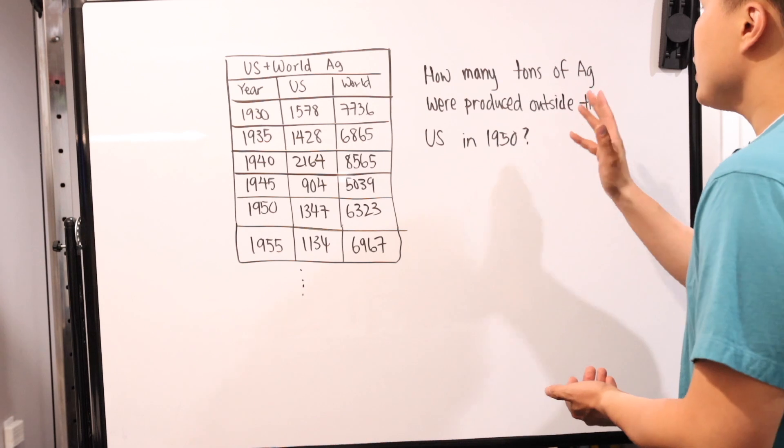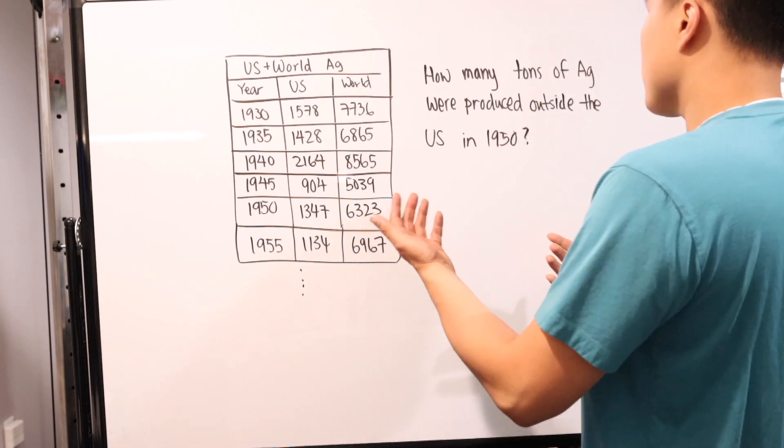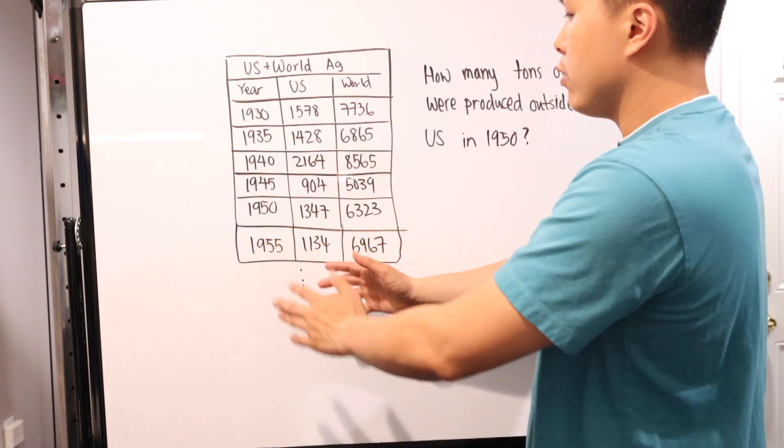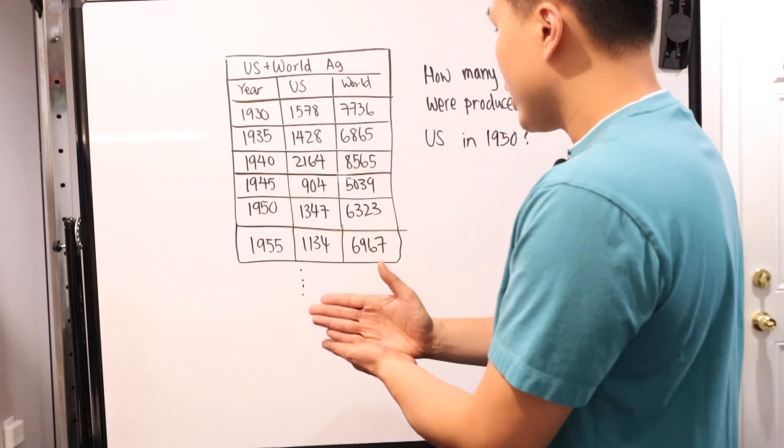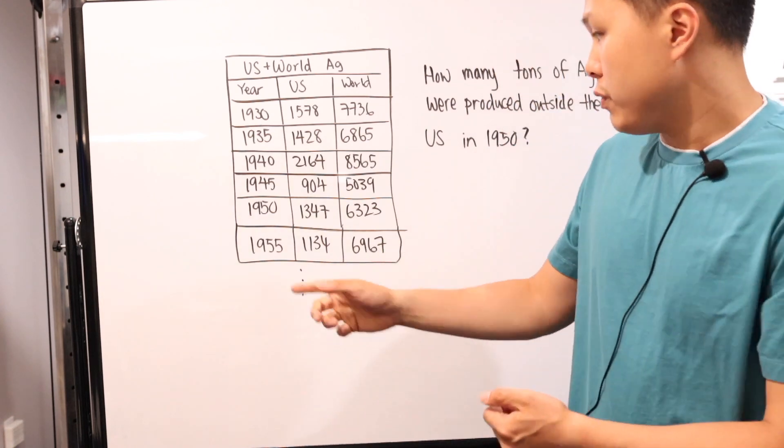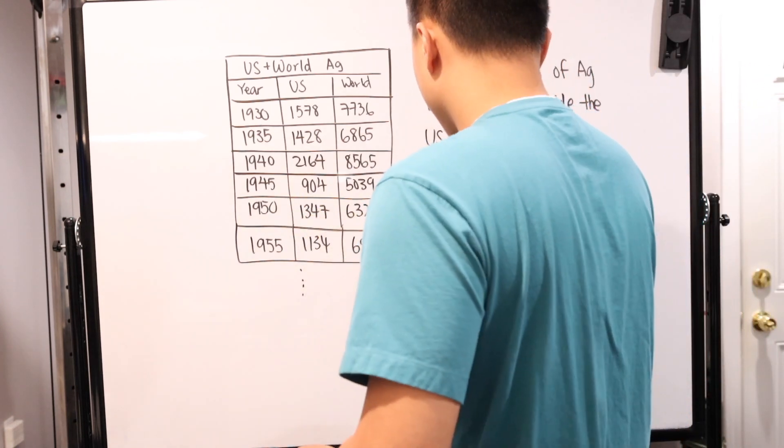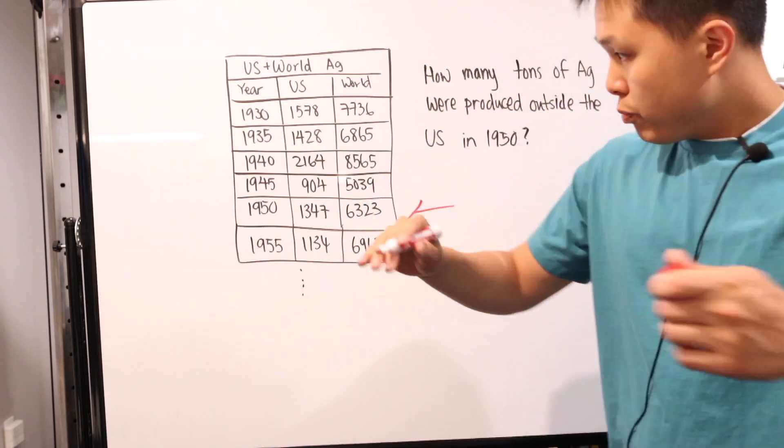Now, the question itself is how many tons of silver were produced outside of the U.S. in 1950? And that's why I say I don't need all the other information. It's only focused, only worried about 1950. So this is the one that we are worried about as well. This row right here, that is it. Nothing else matters.